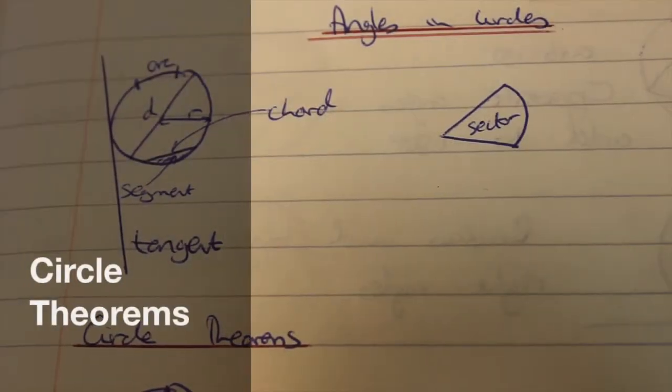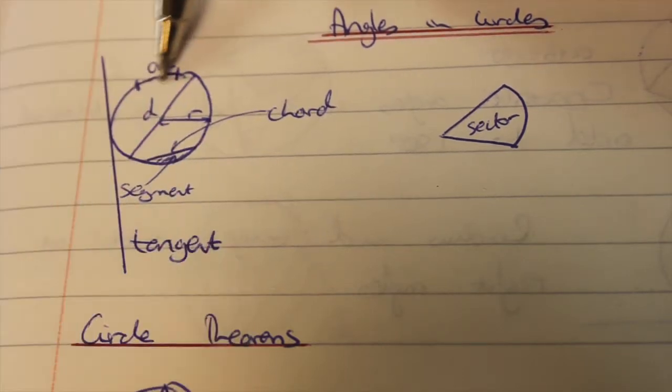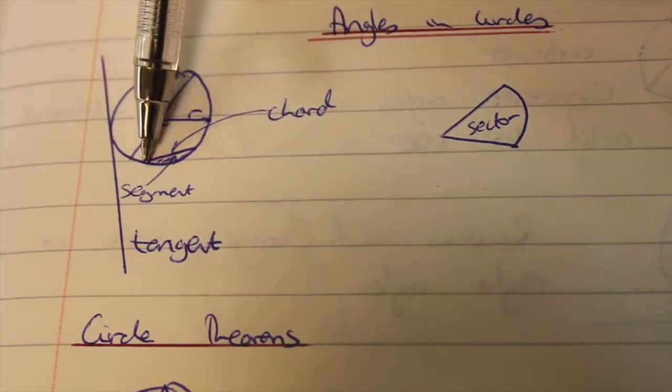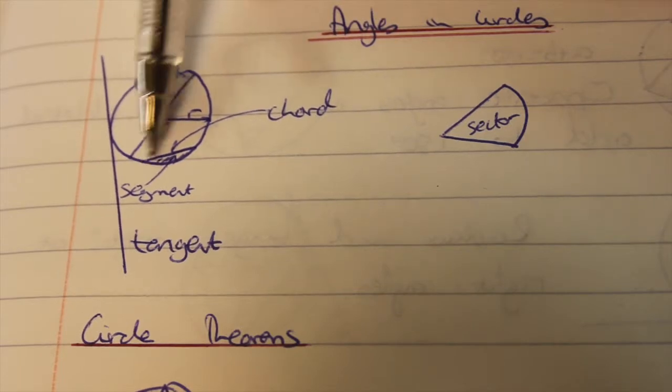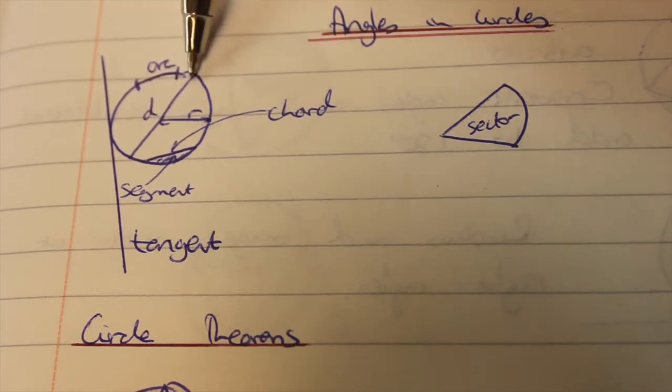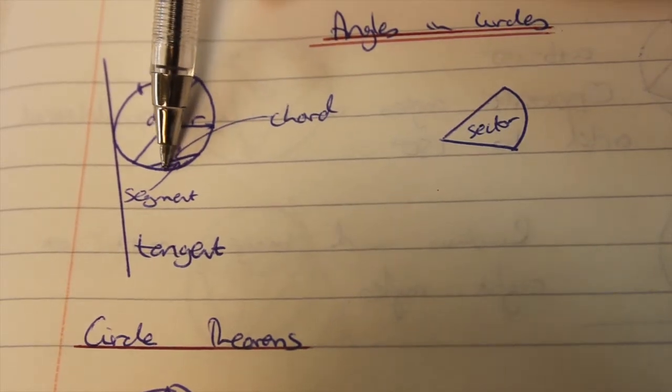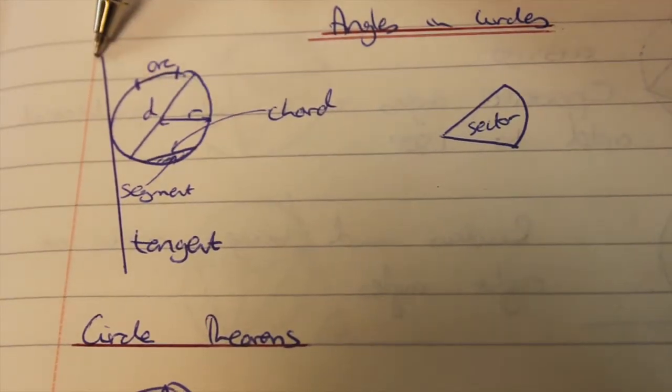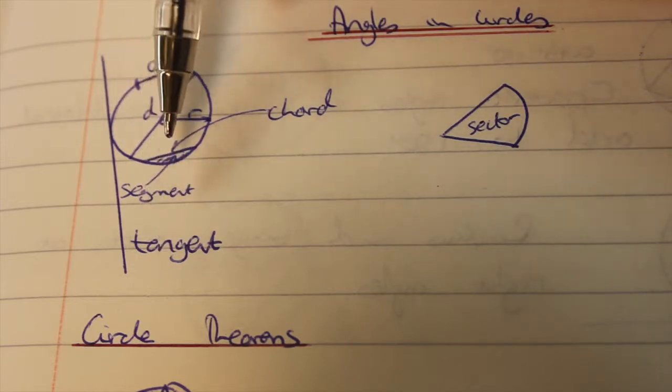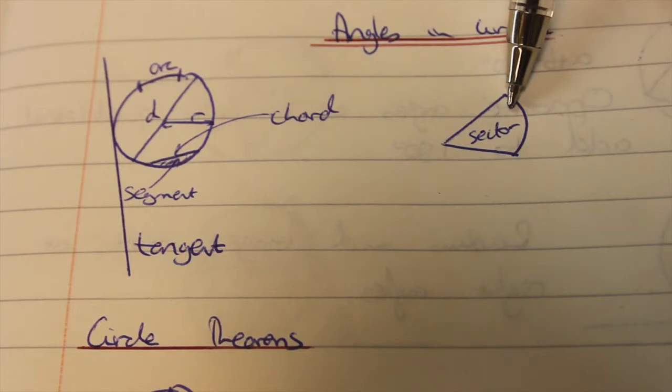I'm going to have a look at angles and circles now. We just want to make sure that we go over the basic terms. An arc is part of the circumference. A chord is a straight line from edge to edge that does not go through the middle. The line that goes from edge to edge through the middle is called diameter. Radius is from the center to the edge and a segment is that bit that's chopped off. A tangent skims along the outside of the circle just hitting it once and a sector is like your pizza pie slice.